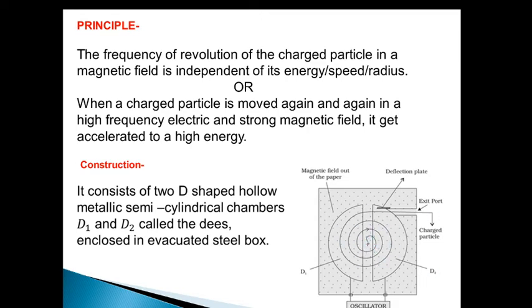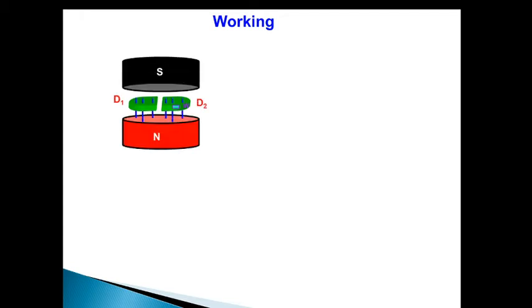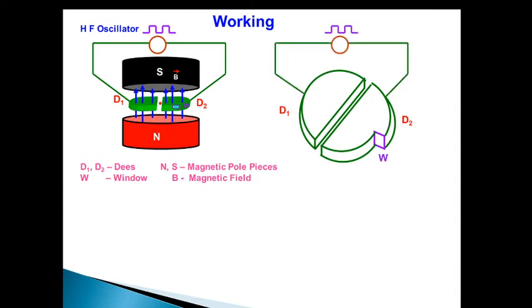See its construction. It consists of two D-shaped hollow metallic semiconductor chambers. Here you can see this D, it is one D and the other is here. These two semi-cylindrical hollow chambers are enclosed in an evacuated steel box. Here a positively charged ion and magnetic field, it is the high frequency oscillator. Now we will see its working. Before that we have to see its construction, see the diagram once again.